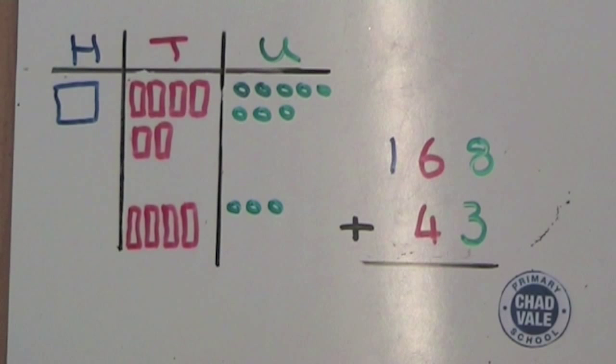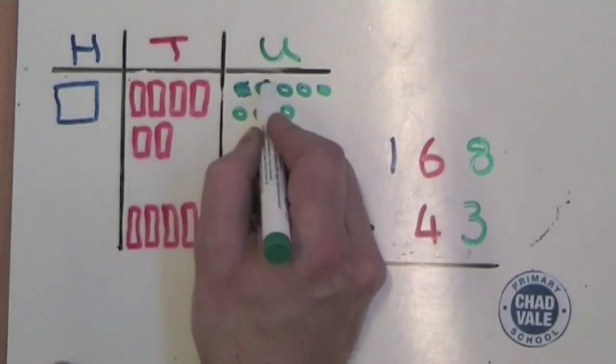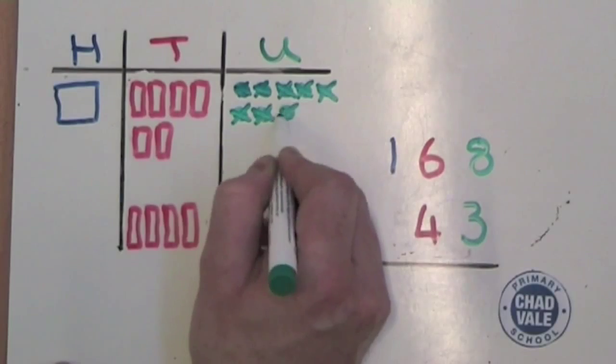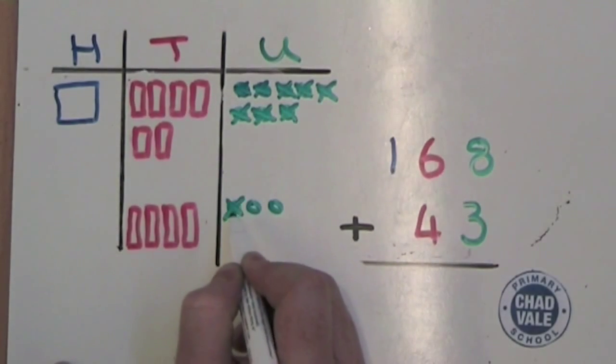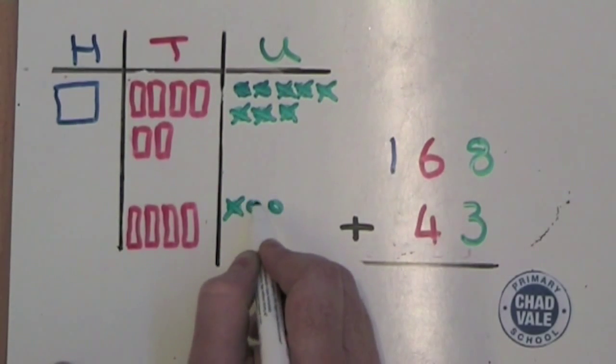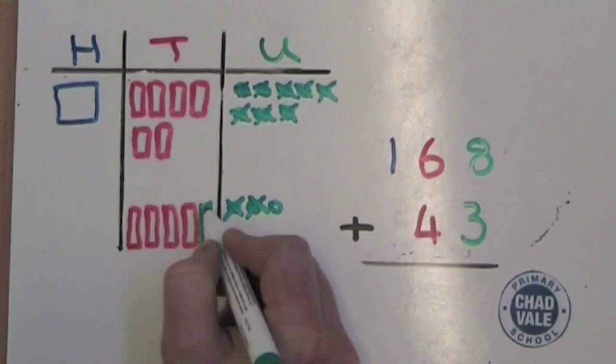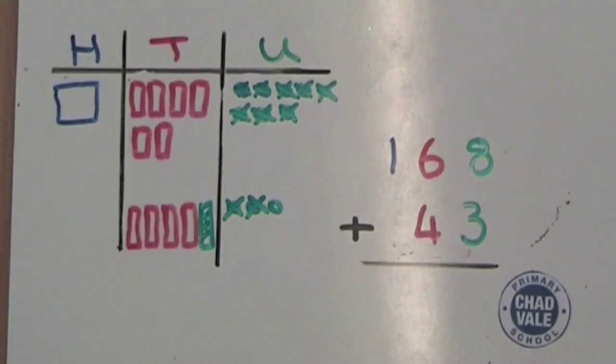Next we need to do 8 units, add 3 units. 1, 2, 3, 4, 5, 6, 7, 8, 9 and when we get to 10, we put those 10 units together like last time and make a tower of 10 and draw them in the tens column. And then we count how many are left, 1 and we write them in the units column.